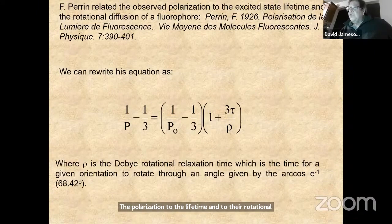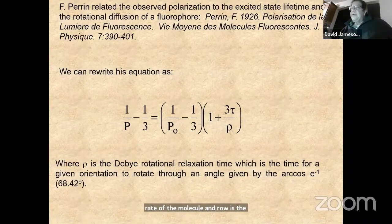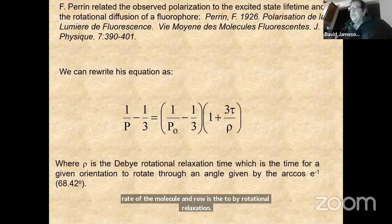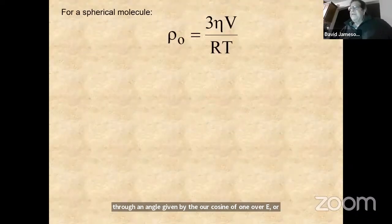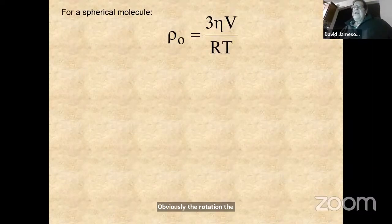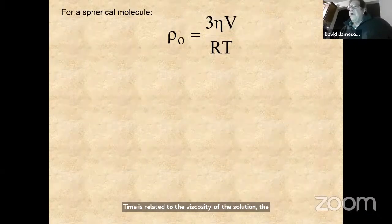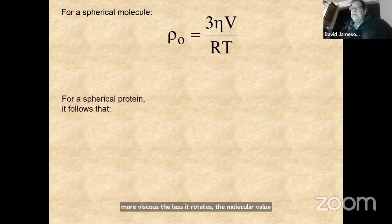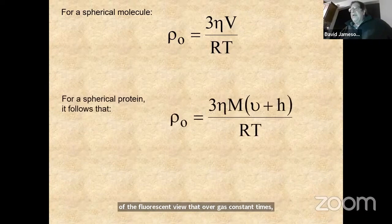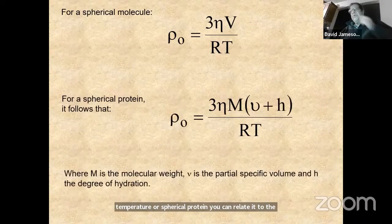Rho is the Debye rotational relaxation time — the time for a given orientation to rotate through an angle given by arccos(1/e), or 68.42 degrees. The Debye rotational relaxation time is related to the viscosity of the solution and the molecular volume of the fluorescent unit over gas constant times temperature. For a spherical protein, it can be related to molecular weight, partial specific volume, and degree of hydration. If a fluorophore is free in solution, it can rotate quickly, giving a low polarization; linked to a large protein, rotation is slow and polarization is high.